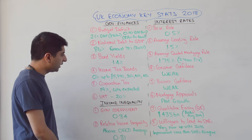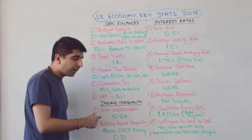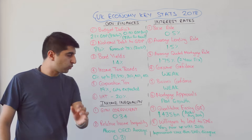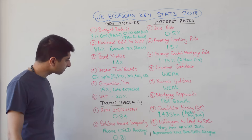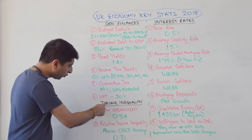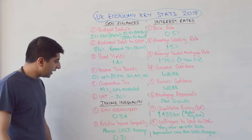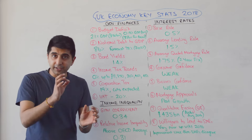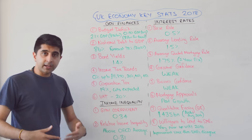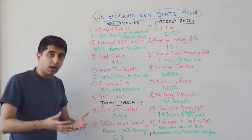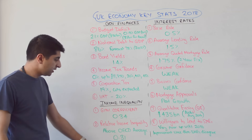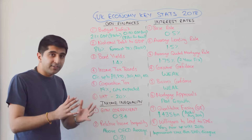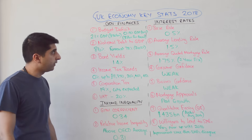Corporation tax stands at 19%, with further cuts expected to around 17% in 2020. VAT is currently at 20%. On income inequality, our Gini coefficient is 0.34. Importantly, since austerity this figure has actually come down. However, relative to other OECD countries — where the average Gini coefficient is 0.31 — our 0.34 represents relatively wider income inequality.